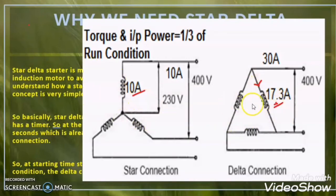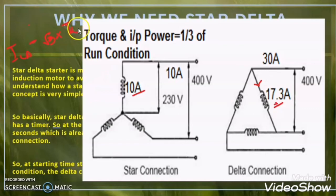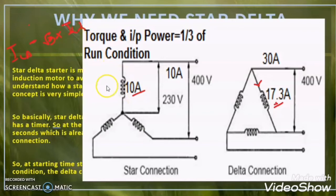The coil current in the delta configuration is 17.3A. So what is the relation? The coil current in the delta configuration is root 3 times the coil current in the star connection. So I can write: coil current in delta = root 3 × coil current in star. When we multiply root 3 by 10A, we get 17.3A. This is the first relation between star and delta configuration.